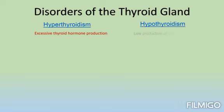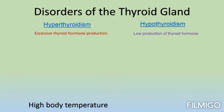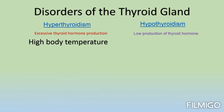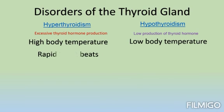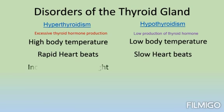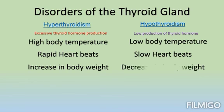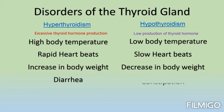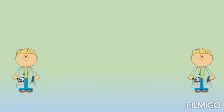Among the common disorders of the thyroid gland, we have hyperthyroidism and hypothyroidism. Hyperthyroidism is excess production of thyroid hormones, while hypothyroidism is low production of thyroid hormones. In hyperthyroidism, we have high body temperature, whereas in hypothyroidism we have low body temperature. We also notice rapid heartbeats in hyperthyroidism, while slow heartbeats occur in hypothyroidism. The same applies to body weight. Additionally, digestive issues such as GI problems occur in hyperthyroidism, and constipation occurs in hypothyroidism.